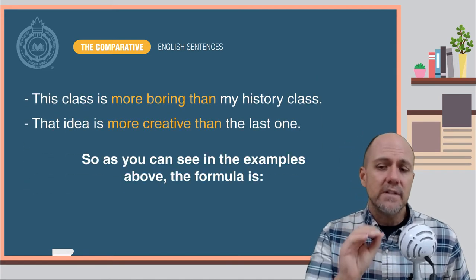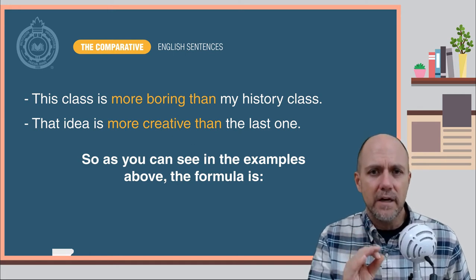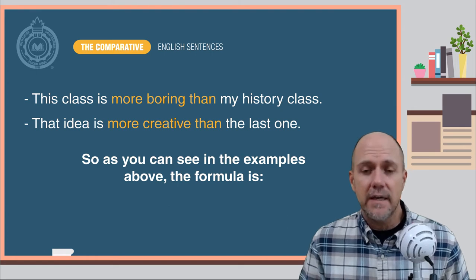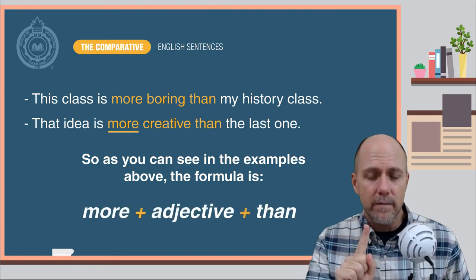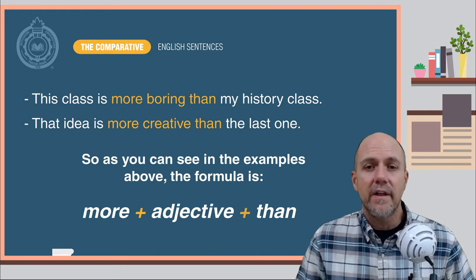So as you can see from the examples above, the formula for this second form of the comparative in English is the word more plus the adjective plus the word than.